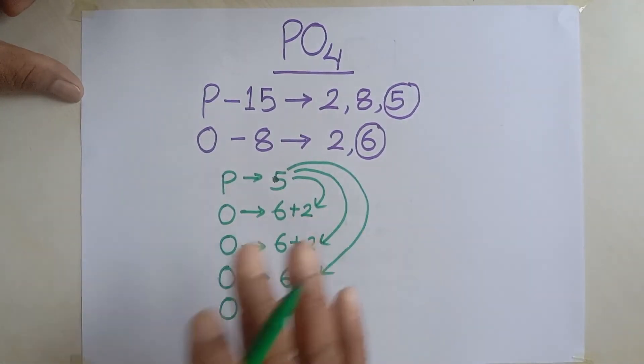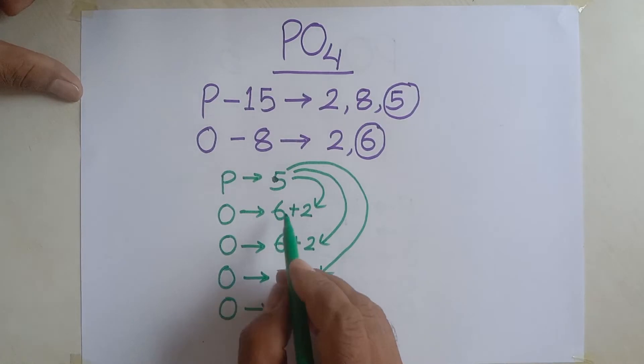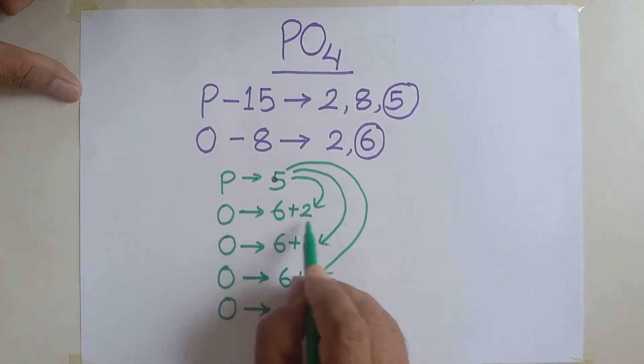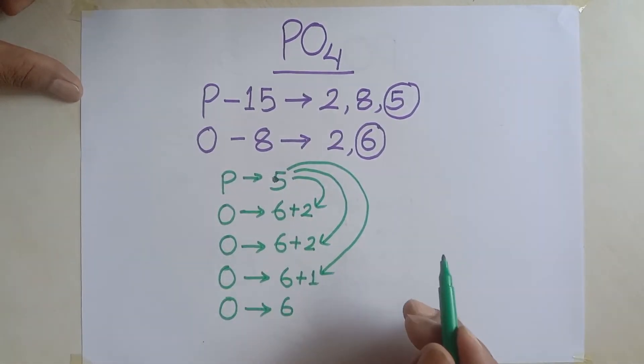Now, what happened? As a result of this sharing, what is seen? This oxygen atom has got eight electrons in the outermost shell, octet formed. This also formed octet.